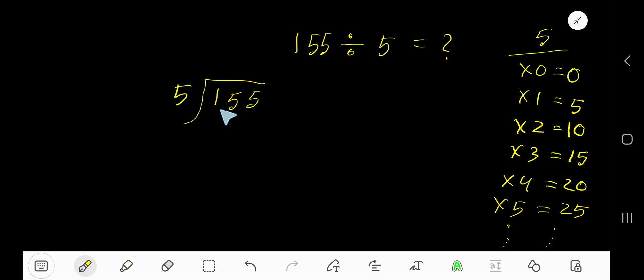5 goes into 1 how many times? 0 times, as 1 is less than 5. So 0 times 5 is 0. Subtract, bring down this 5. 5 goes into 15 how many times? 3 times.